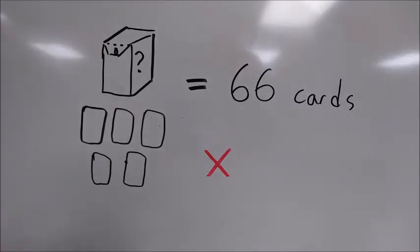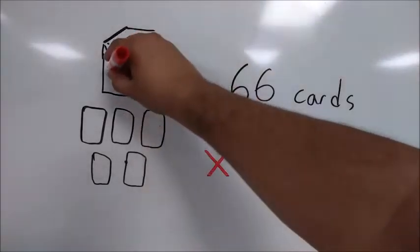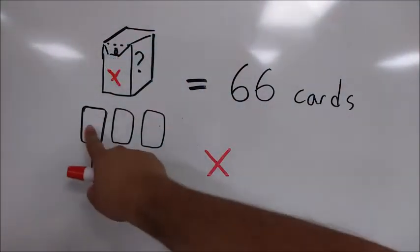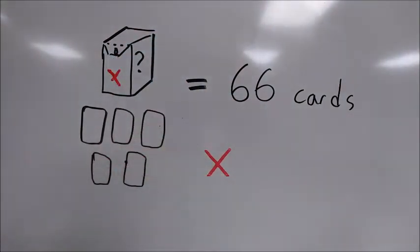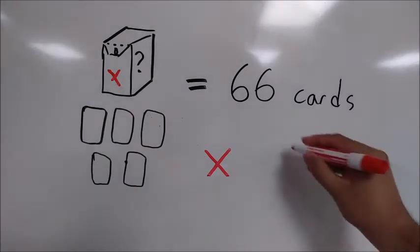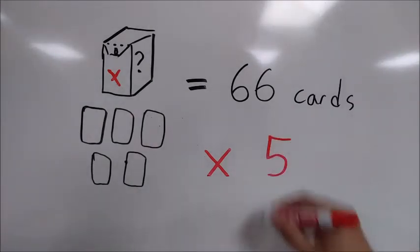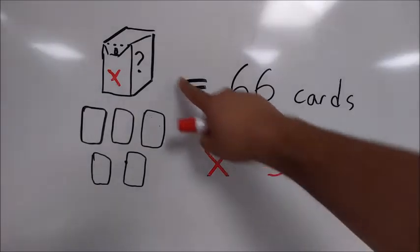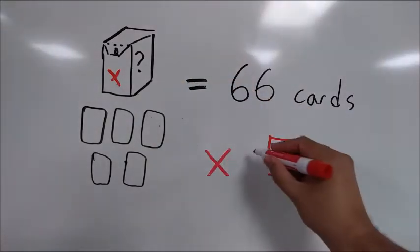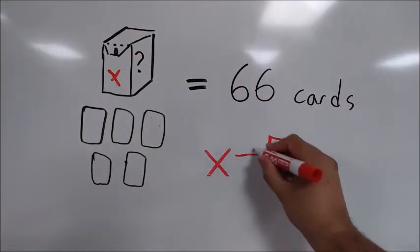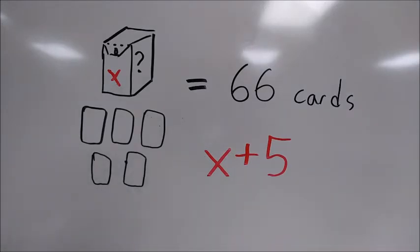X can be any number, we just need to figure out what it is. In addition to whatever is in the box, which is X, he also has 1, 2, 3, 4, 5 additional cards. So he has whatever is in the box, plus 5. And then this is going to be a total of 66 cards.